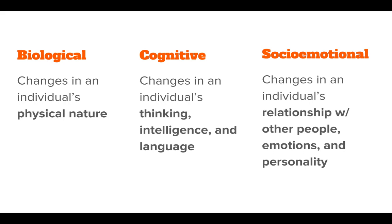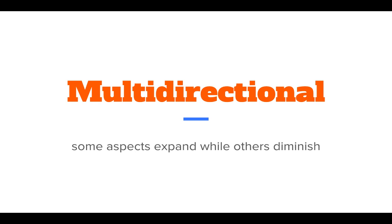The third dimension is socio-emotional: changes in an individual's relationships with other people, emotions, and personality. Examples include feelings toddlers have, aggression, going to a prom, meeting a friend or getting into a fight — all these relationships and how your personality develops because of them. If you don't have relationships with other people, that's going to greatly affect socio-emotional development as well.